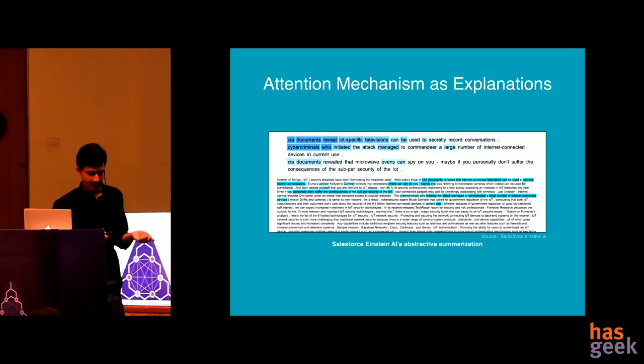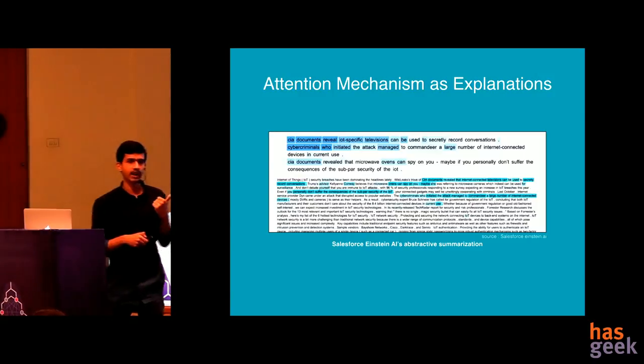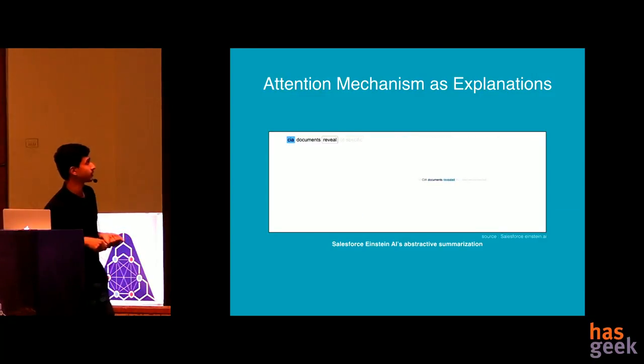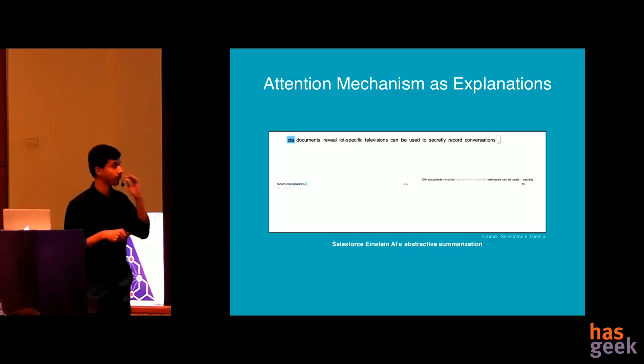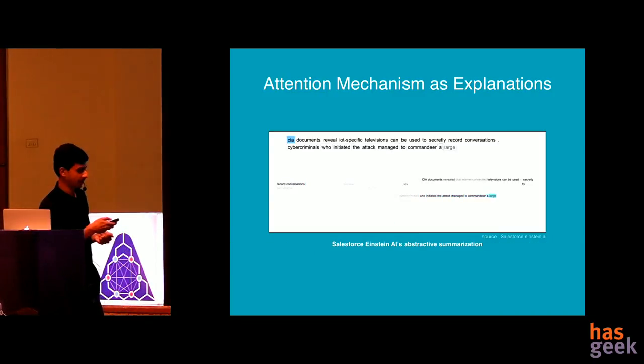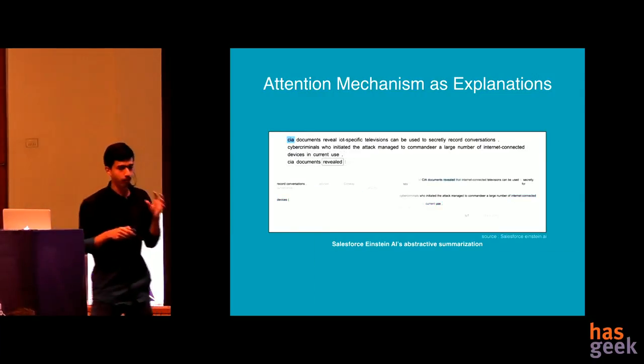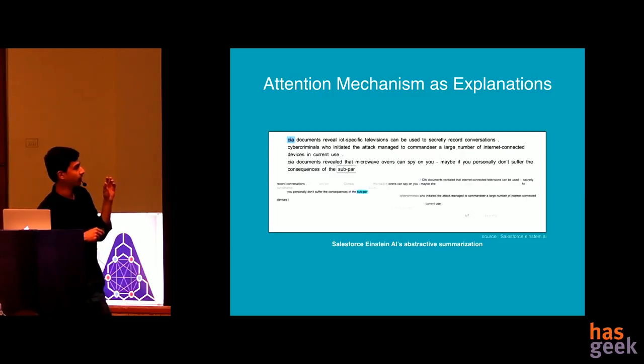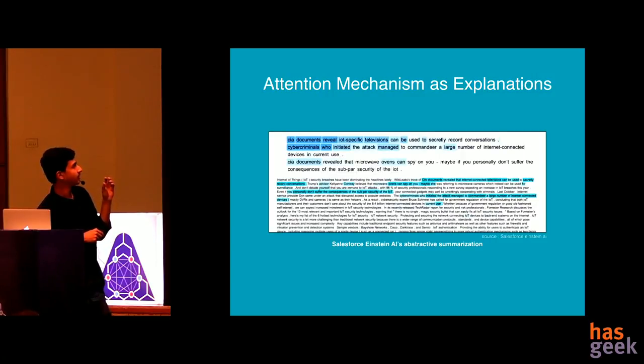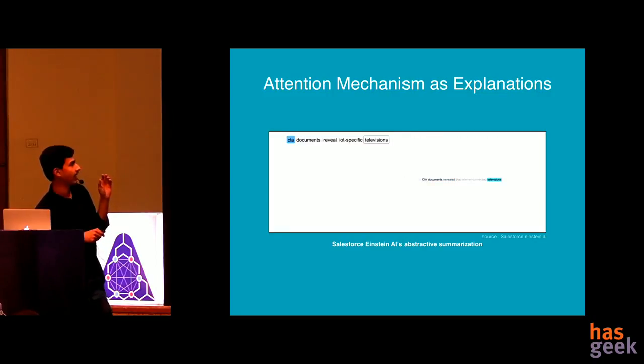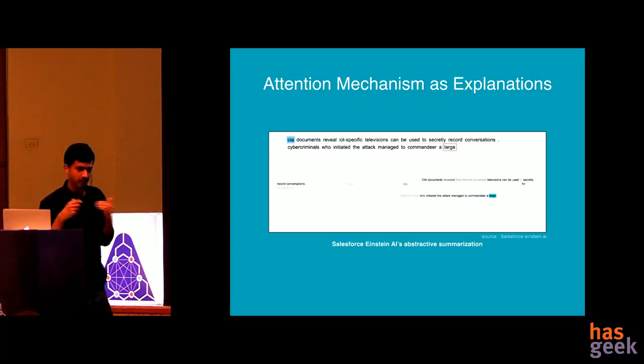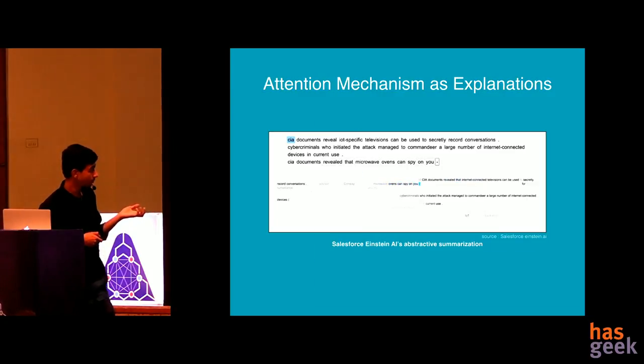So the next model specific approach would be attention mechanisms employed to explain a model. So in this, you see Salesforce has this new abstractive summarization model where essentially whatever portion or input text is actually being attended to, that gets a heavier weightage. You see here, so the summary here has elements which were important and attention was paid to here are getting more importance. So you get to know intuitively that all of those attention points were the ones that were used to make the final summary.